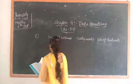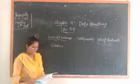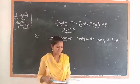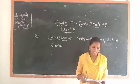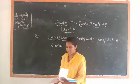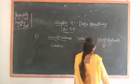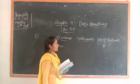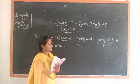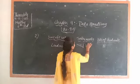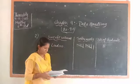In the first row, the sweet name is ladu. Count the ladus — total how many? They are given continuously: ladu, burfi, ladu, jalebi... Count the total number of ladus — it will be 11. So 11 students like ladu. For tally marks, write groups of 5 then a remaining group of 1, giving 5 plus 5 plus 1 equals 11.